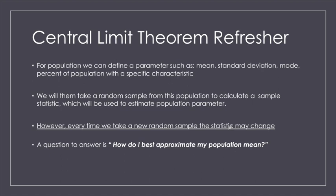The first thing I want us to do is go over the central limit theorem again — this is a concept we covered right at the end of chapter 6. For the central limit theorem, if we have a population, we're going to define a population parameter, and that could be our mean, the standard deviation, mode, or even a percentage or proportion of a population with a specific characteristic.